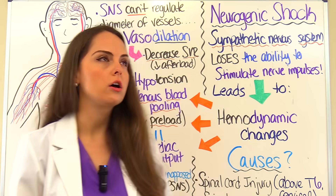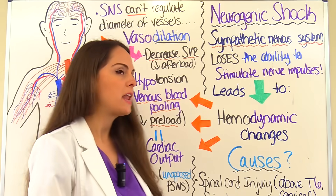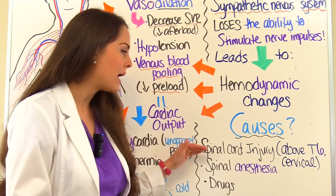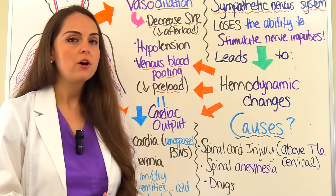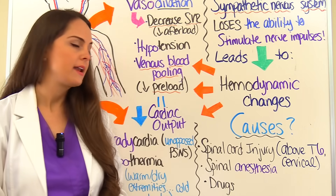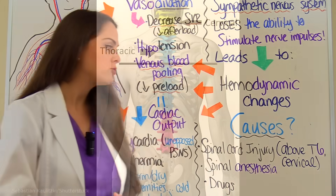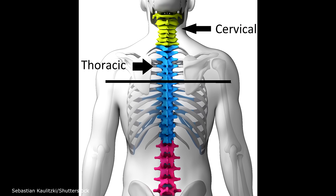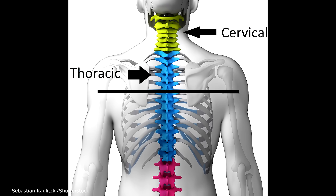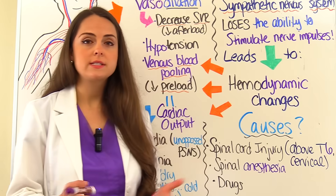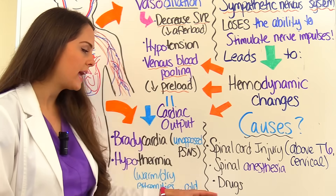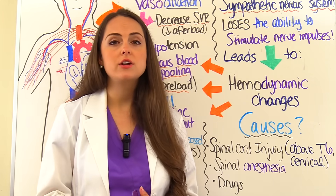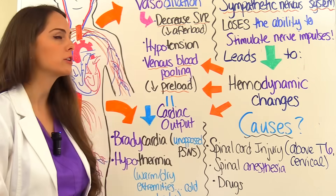What can cause neurogenic shock and which patients are at risk? Any patient that has had a spinal cord injury — specifically a cervical spine injury or an upper thoracic injury above T6 — is at risk for neurogenic shock. In addition, patients who have received spinal anesthesia or are taking drugs that affect the autonomic or sympathetic nervous system can also develop neurogenic shock.